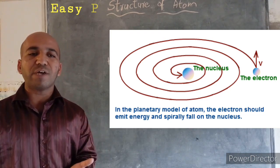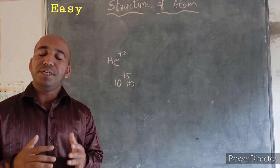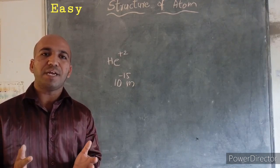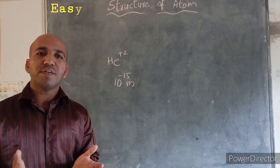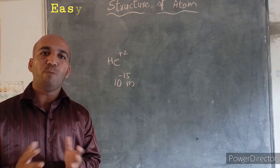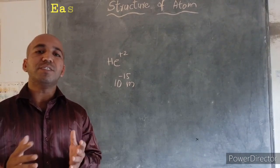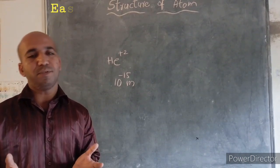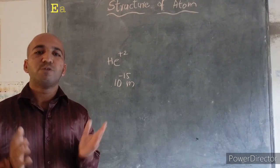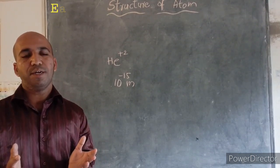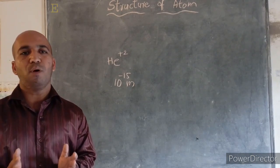And one more defect of Rutherford's atomic model is, he didn't identify how many orbits are there around the nucleus. And how many electrons are there around the nucleus. So he didn't name the orbits. So these are the few defects of Rutherford. And the third atomic model that we are going to discuss is Bohr's atomic model.